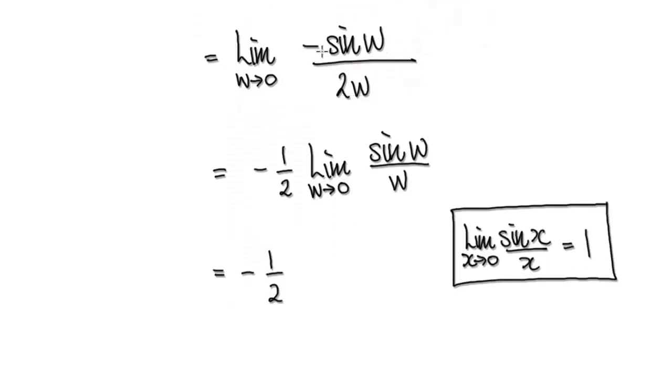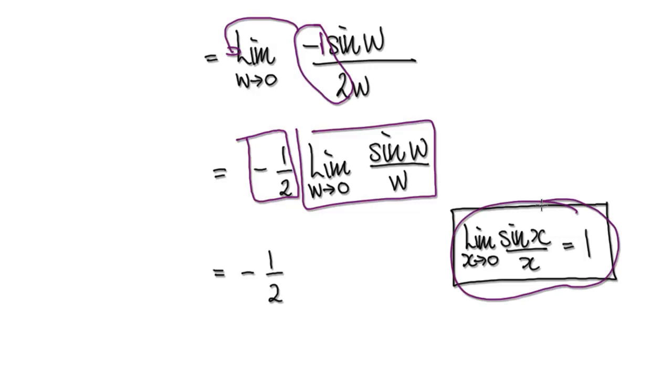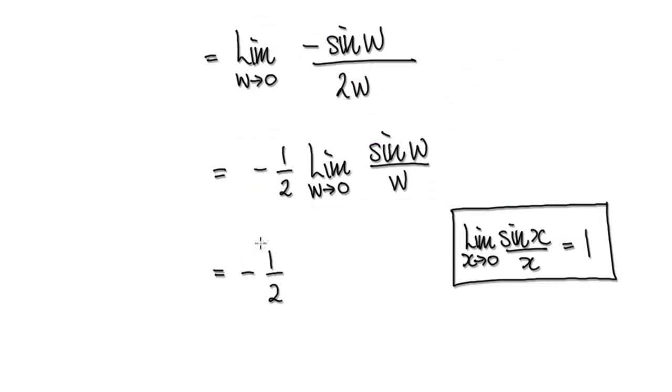We can see this negative 1 half here. Let's drag the negative 1 half out of the limit. That would then give us this thing here with what's left. We've seen this many times in the past. This block here becomes 1, this block becomes 1. 1 times negative 1 half becomes negative 1 half. So the limit is negative 1 half.